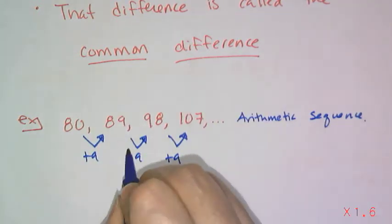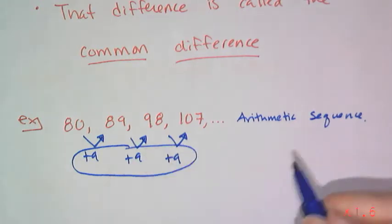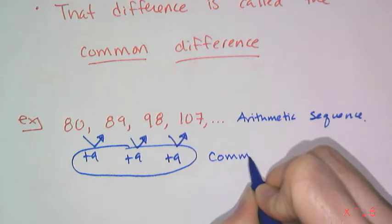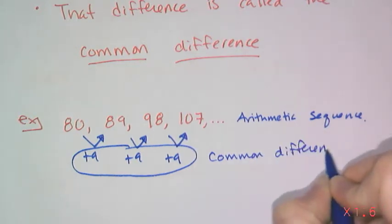And this 9, we called it a first difference in Algebra 1, well now we're going to call it a common difference, because it is the difference that is common between every single term.